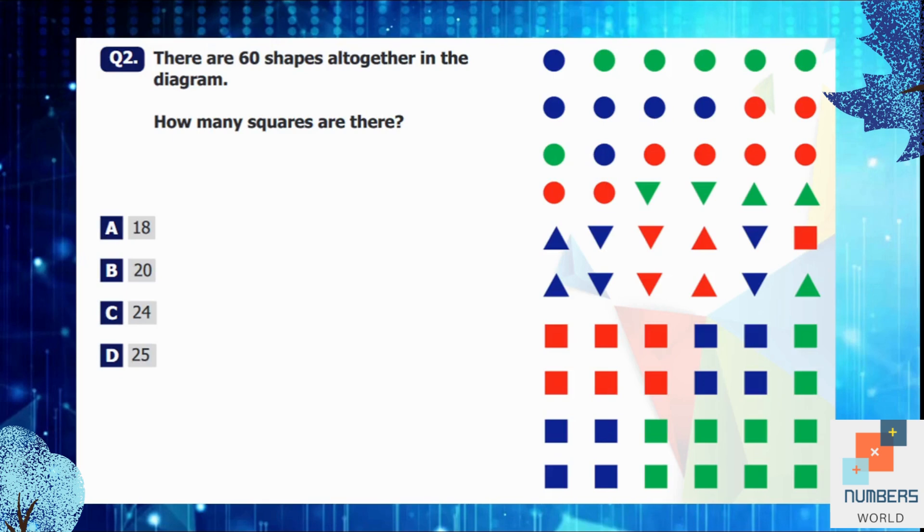Question number 2: There are 60 shapes altogether in the diagram. How many squares are there? So here we can see there are so many squares. So let's count them. 1, 2, 3, 4, 5, 6, 7, 8, 9, 10, 11, 12, 13, 14, 15, 16, 17, 18, 19, 20, 21, 22, 23, 24. So there are 24 squares.